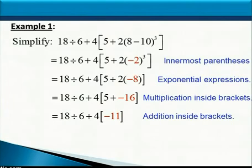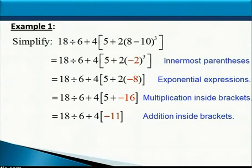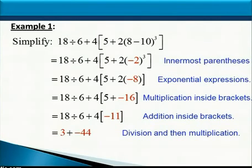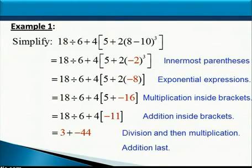We still have the brackets there to denote the multiplication of 4 outside. Now there are no exponents outside the grouping symbols, so we move to multiplication and division in the order they occur from left to right. Reading the expression left to right, we have a division first, then a multiplication — so 18 divided by 6 is 3, and 4 times negative 11 is negative 44. Then we add 3 plus negative 44 to get negative 41 as our final answer.